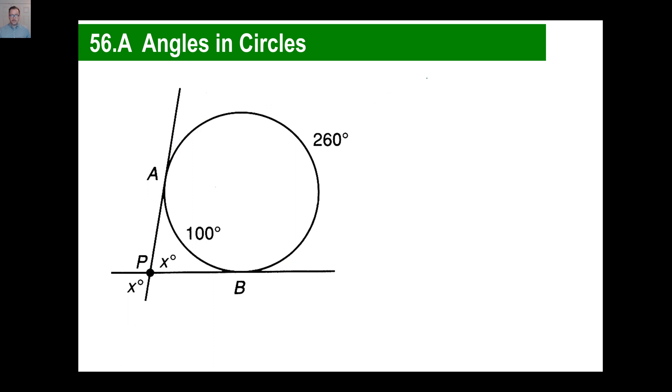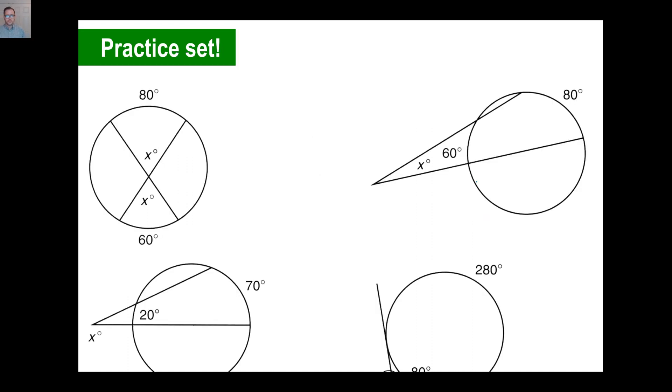Well, the answer is, again, they intersect outside, so you take 260 minus 100, which is 160, and you divide by 2, which is 80 degrees. And there you go, which was probably what you guessed, or somewhere close to that. All right, try the practice set, pause it, and give it a whirl.